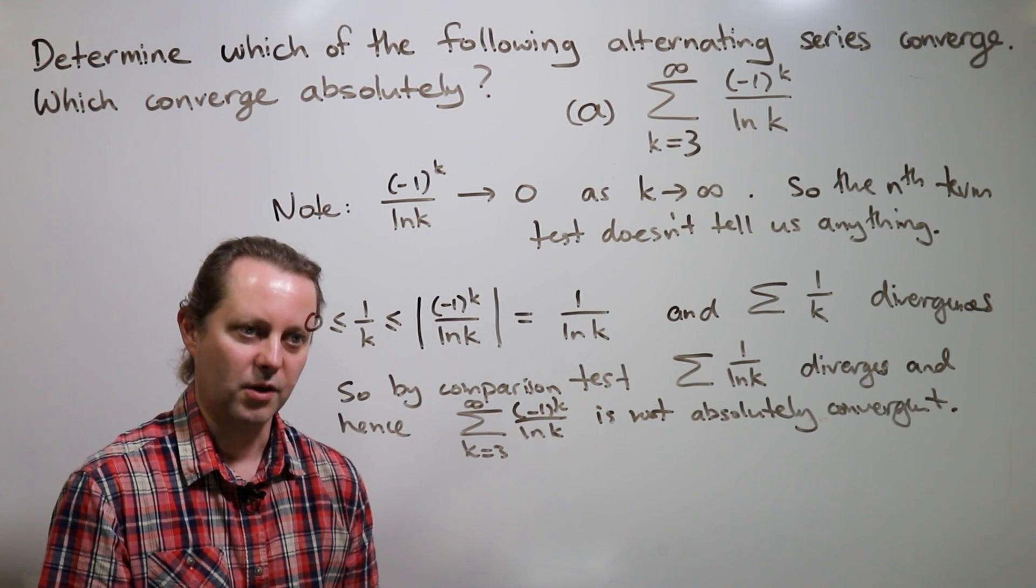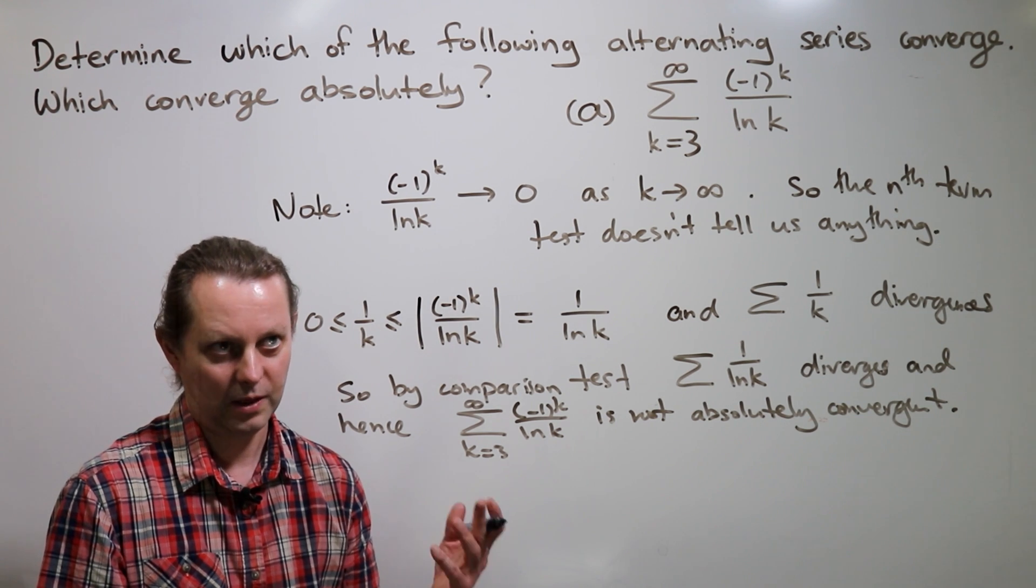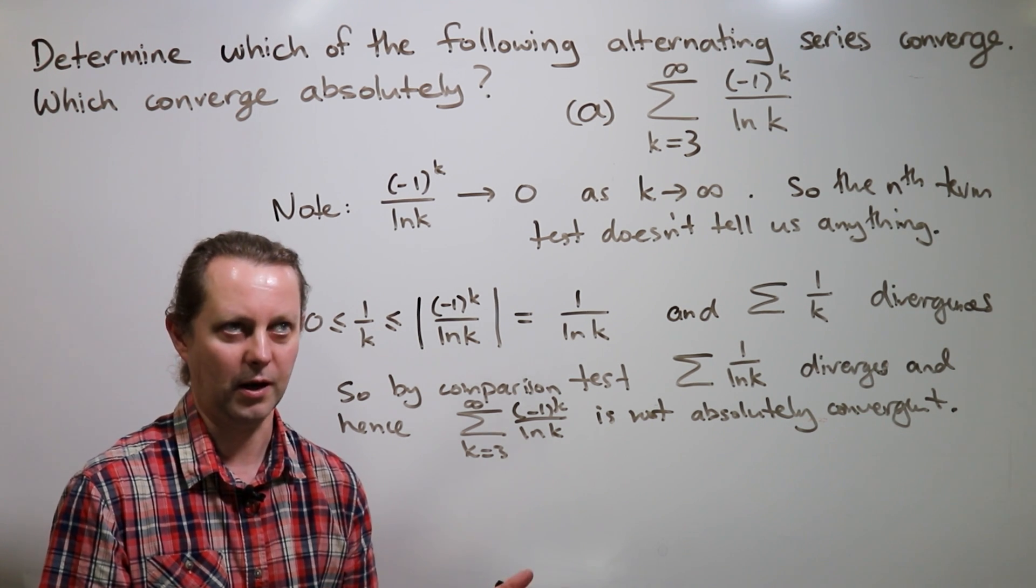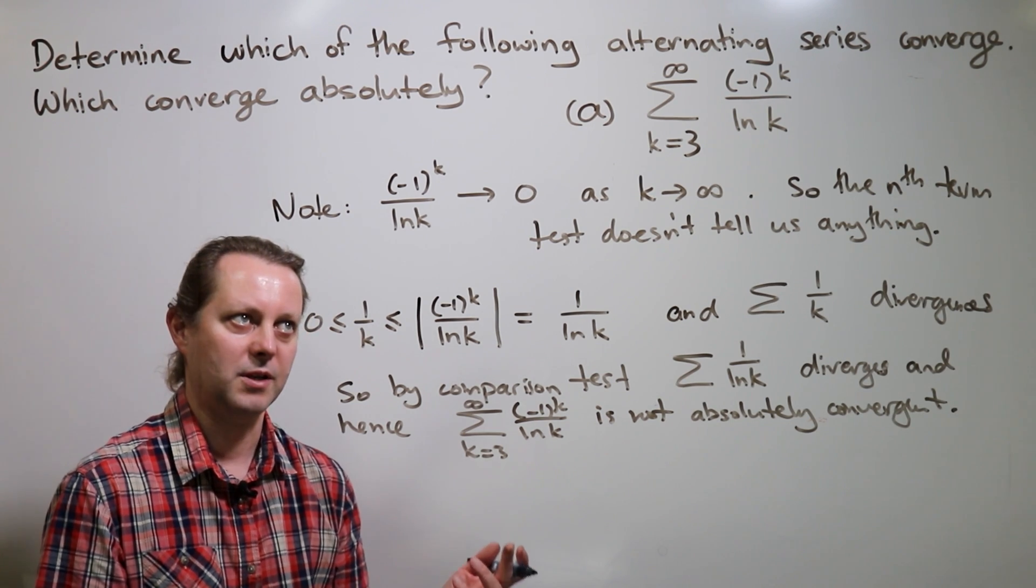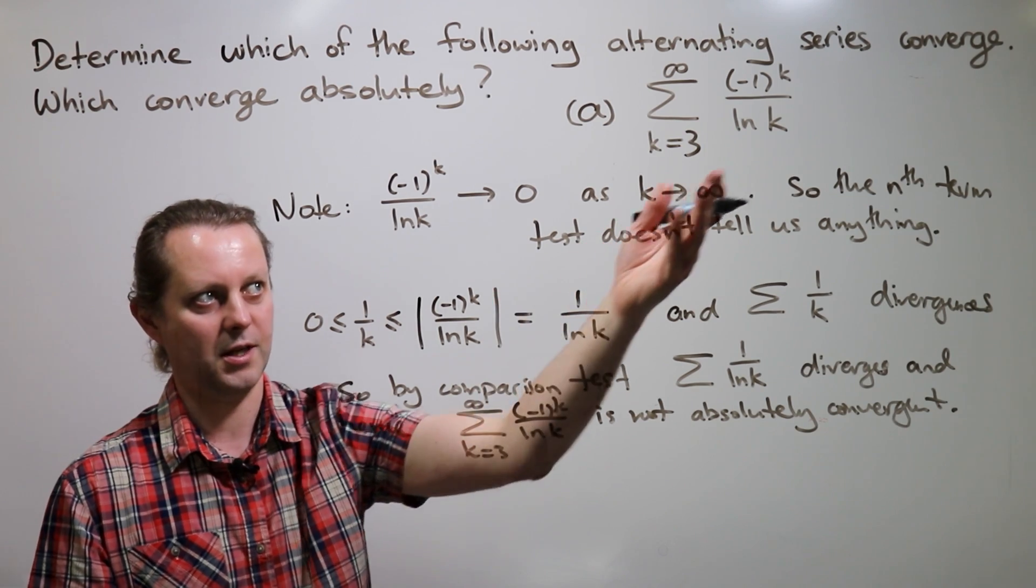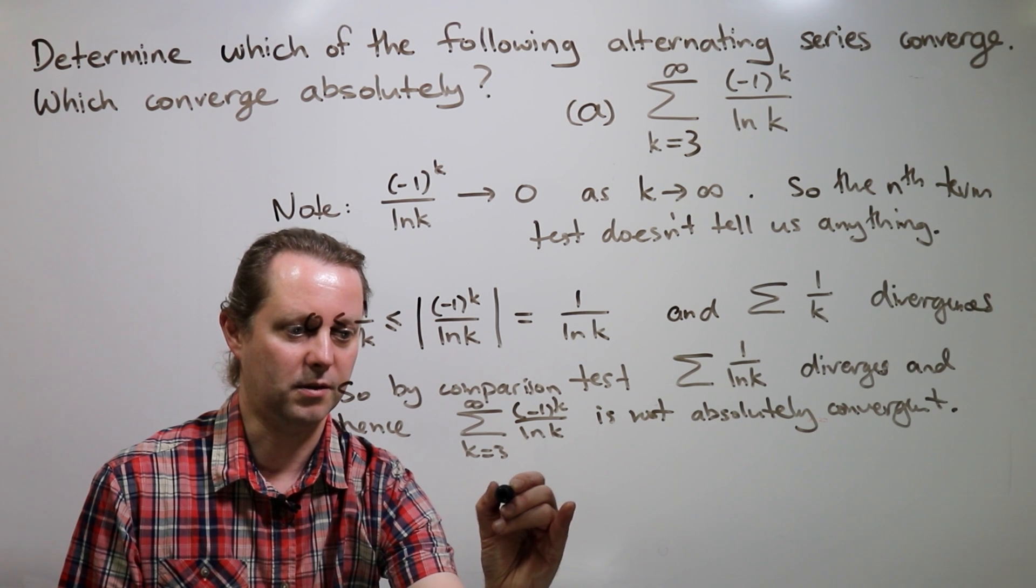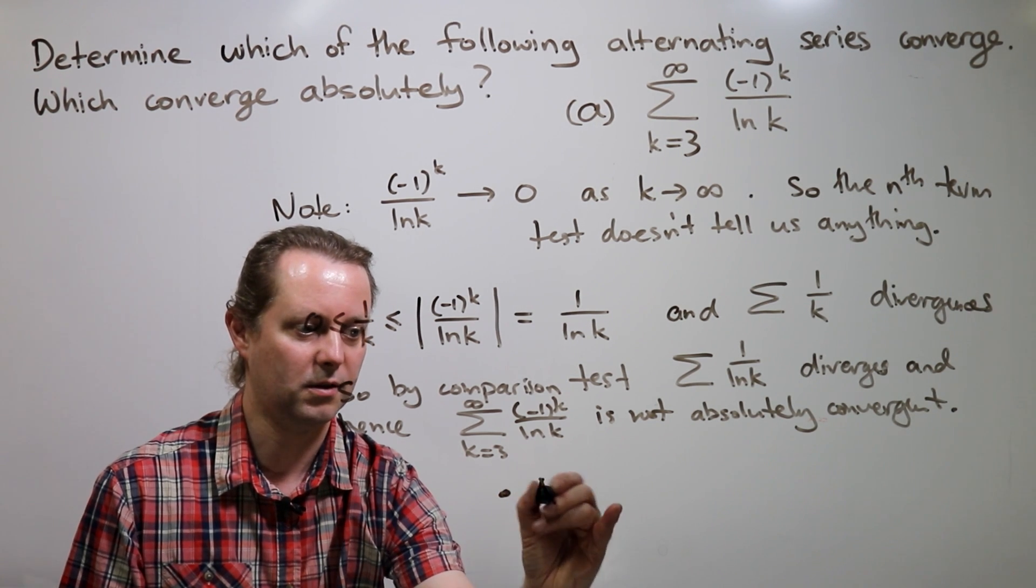So we've seen that this series is not absolutely convergent. We'd like to test whether it's convergent. And for that, because it's an alternating series, we'll apply the Leibniz test. Leibniz test, the first thing you would check is it's alternating. We're told that, and you can see that in the form here, minus one to the k times something positive. So let's just make a note of these things. It's alternating.